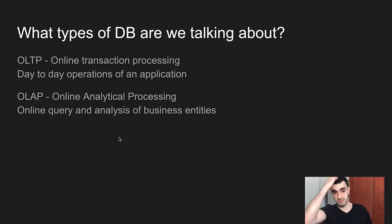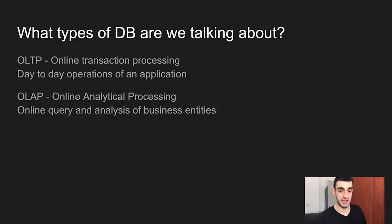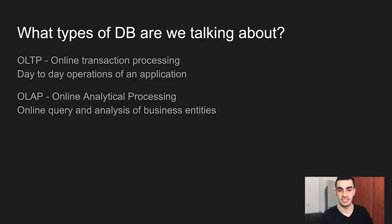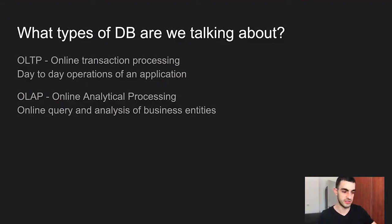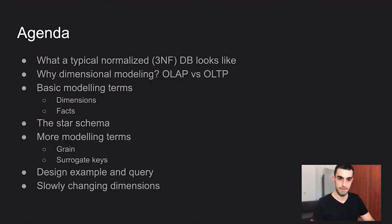Let's start by talking about what types of databases there are. There is OLTP — Online Transaction Processing — which is the day-to-day operational database for your application where daily user transactions happen. And we have OLAP — Online Analytical Processing — which is the database we create for the data warehouse, where we do online querying and analysis of business entities. Importantly, this is about online analytical processing, not offline batch processing.